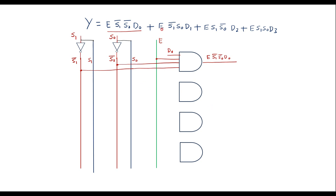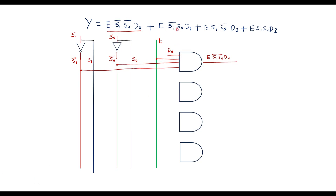For the second product term E·S1̄·S0·D1: the inputs to the AND gate are D1, S1̄ (taken from the same inverter output), S0 (directly), and the enable signal E. The output of this AND gate is E·S1̄·S0·D1.